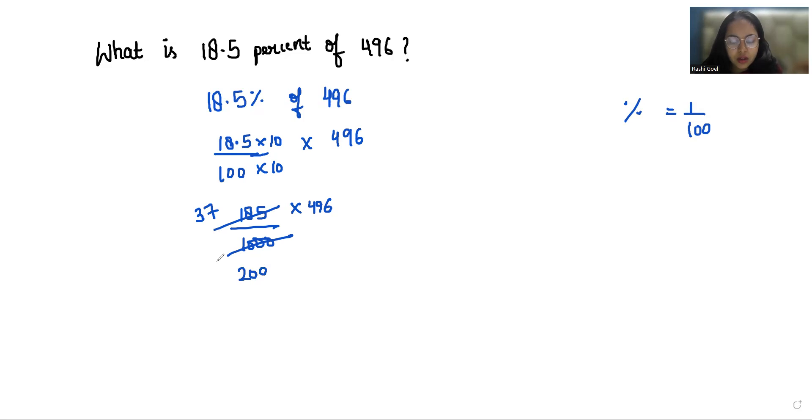Now 37 times 496 by 200. I am going to reduce this by 2, so this gives us 100. 2 times 2 is 4, 2 times 4 is 8, 16. So what is left is 37 times 248 by 100.